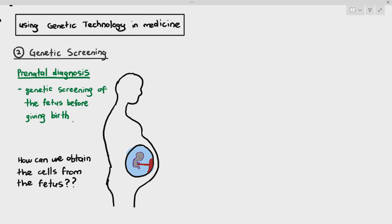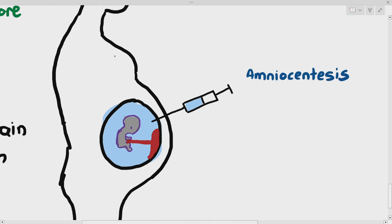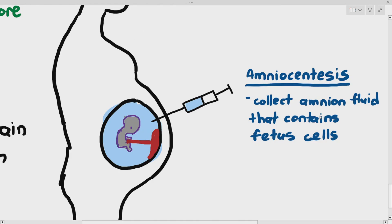There are three ways of doing it. The first way is known as amniocentesis. What that basically does is we insert a needle through the abdominal area into the mother's womb. We have to be careful — an ultrasound is done together with it to make sure it does not pierce through any important structures. The doctor will collect the amnion fluid, that blue-colored area that surrounds the fetus. We collect the fluid because it contains fetus cells — some of the cells are broken up and floating around in the fluid and we can get that.